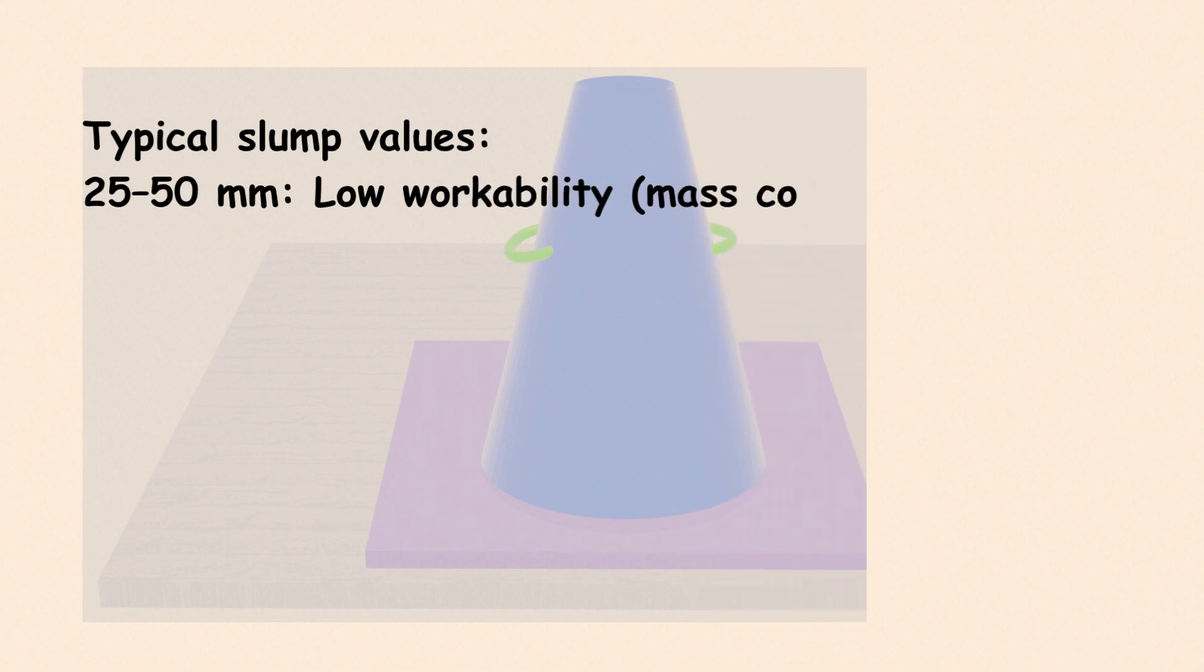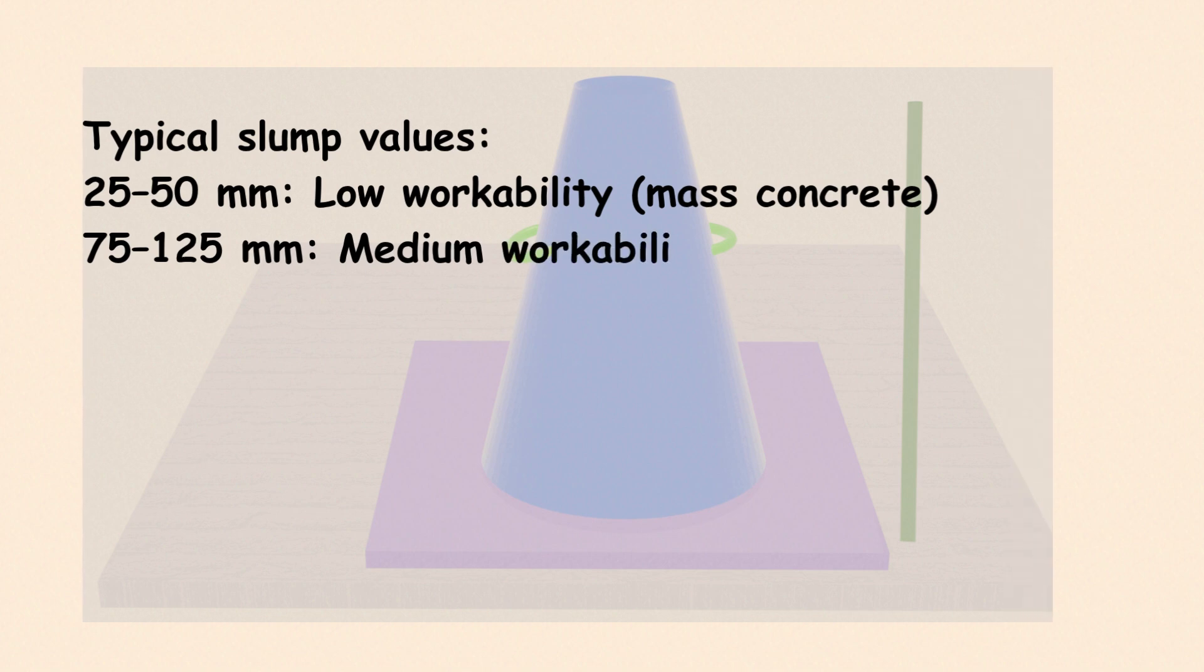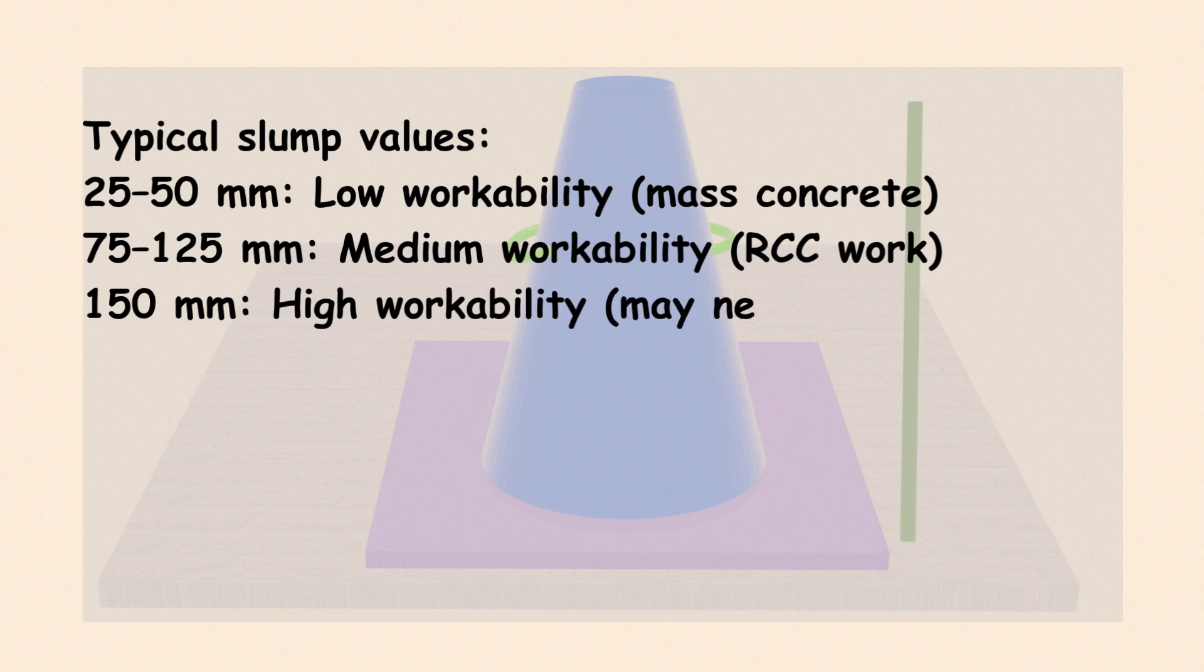Typical slump values: 25 to 50 millimetres, low workability; 75 to 125 millimetres, medium workability. Above 150 millimetres, high workability may need special tests.